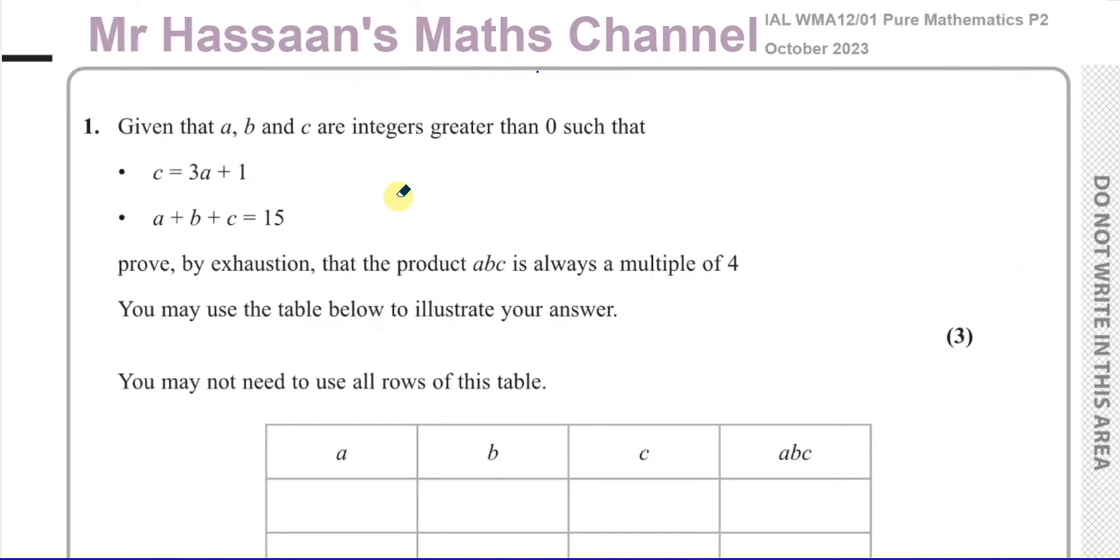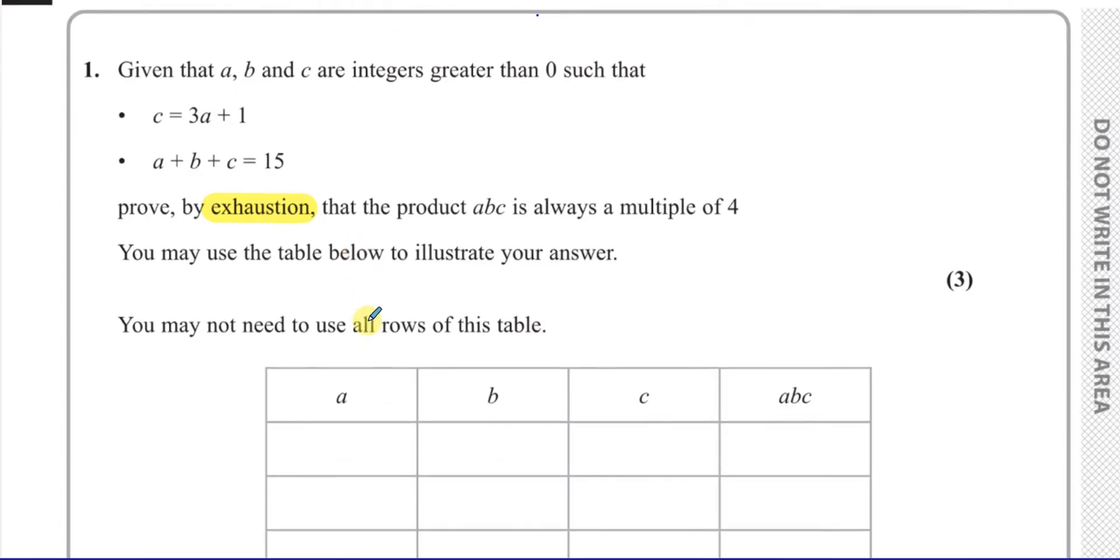Now let's make a start with question number one. It says, given that A, B, and C are integers greater than zero such that C equals 3A plus 1 and A plus B plus C equals 15. We know they're integers and they're all positive. Prove by exhaustion that the product ABC is always a multiple of 4. You may use the table below to illustrate your answer. You may not need to use all the rows of the table.